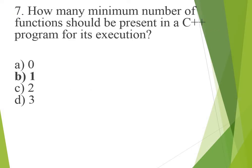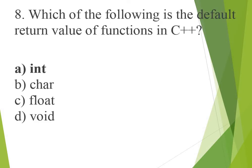How many minimum number of functions should be present in a C program for its execution? The minimum number of functions should be one. The default return type of a function in C is integer — int.